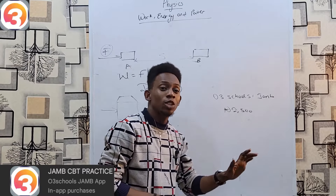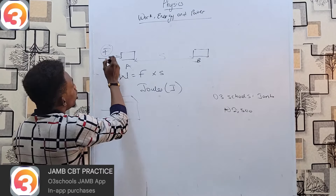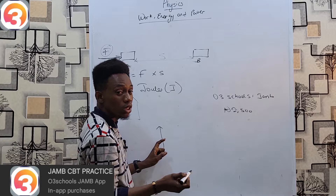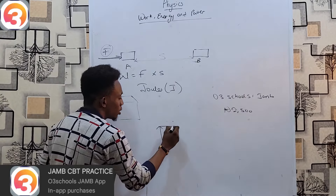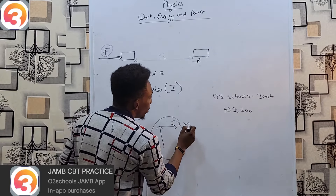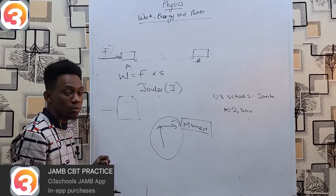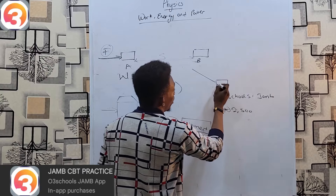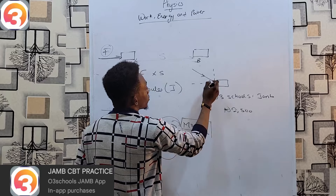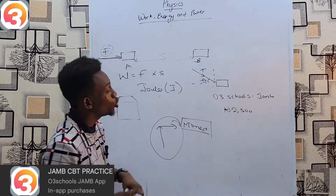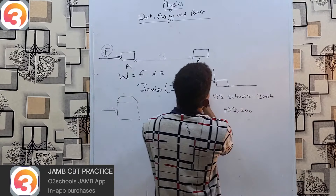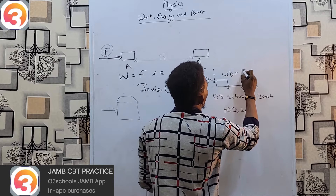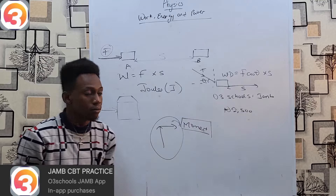Please note: the force being applied and the distance moved must be parallel to each other. If the force is horizontal, the distance must also be horizontal. If the force is vertical, the object must also be moving vertically. If your force and distance happen to be perpendicular, that falls under a separate topic. When a force acts on an object at an angle θ, you must resolve it to the horizontal component to match your horizontal displacement. Therefore, work done in that case becomes F cosθ × s.